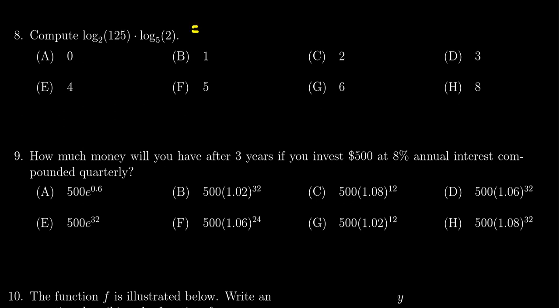This is a situation where the change of base formula can be very useful. If I turn both of these into natural logs, log base 2 of 125 becomes the natural log of 125 over the natural log of 2.